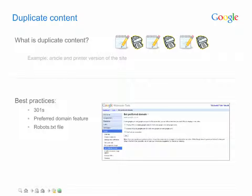In cases like this, there are steps you can take to help Google determine which is the best copy to show in search results. With duplicate content on your own site, your best bet is to minimize the duplication in the first place. Use 301 redirects to forward visitors to a preferred page, consistently link to the preferred version, and list it in place of other versions in your XML sitemap.